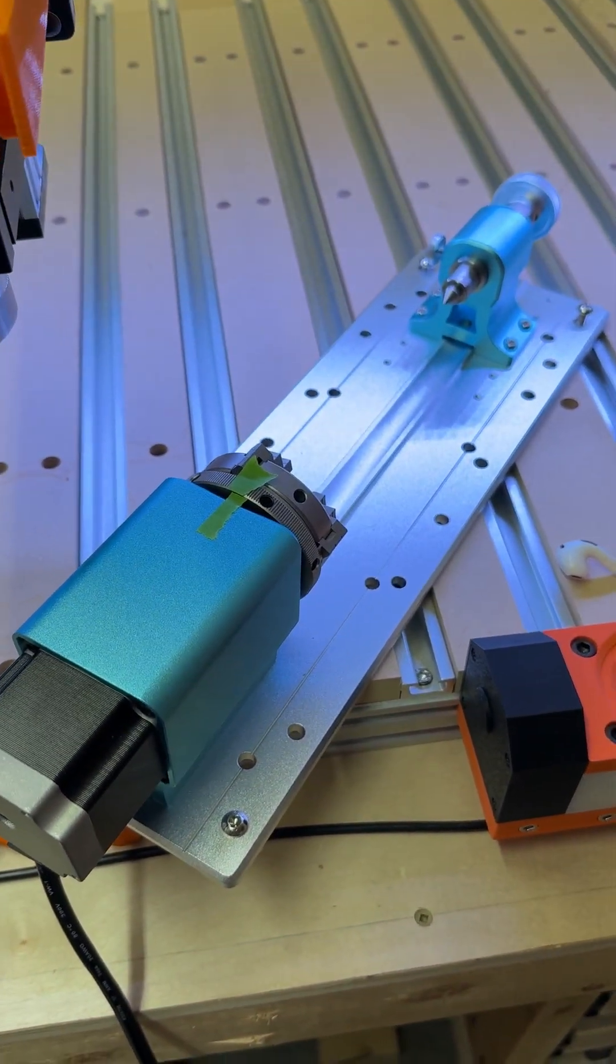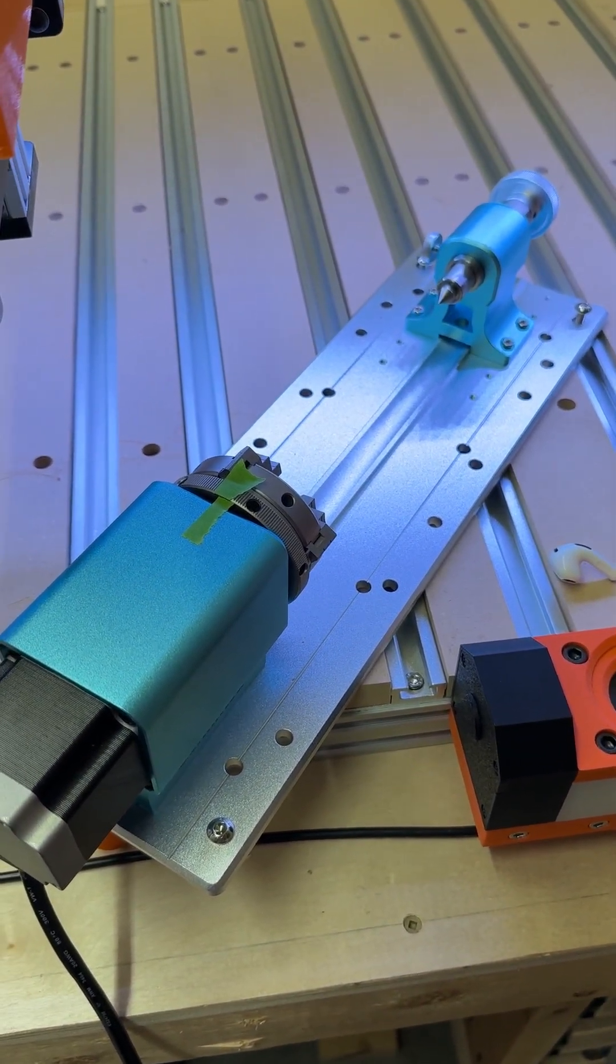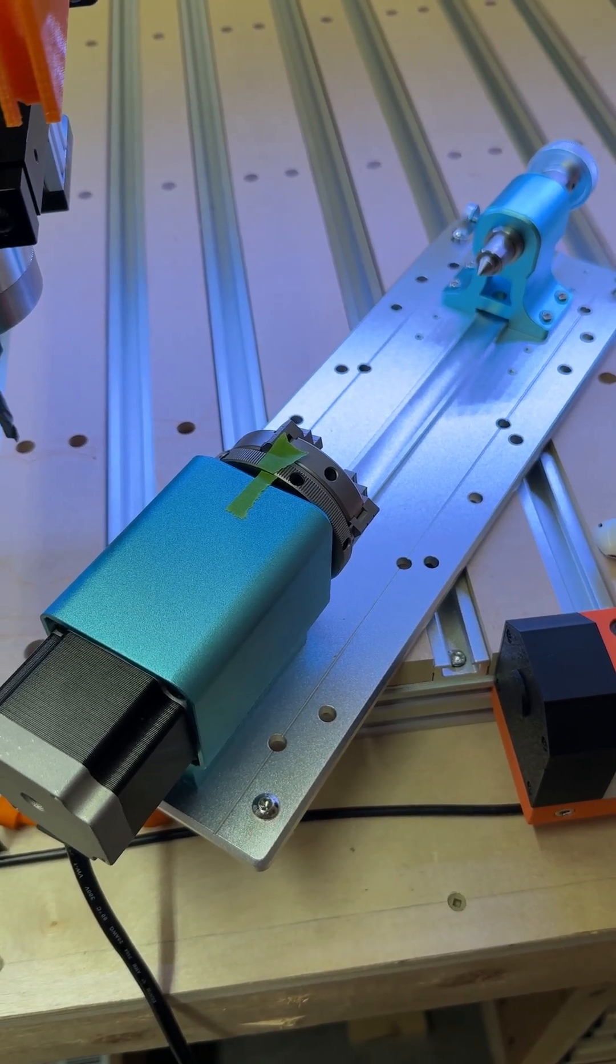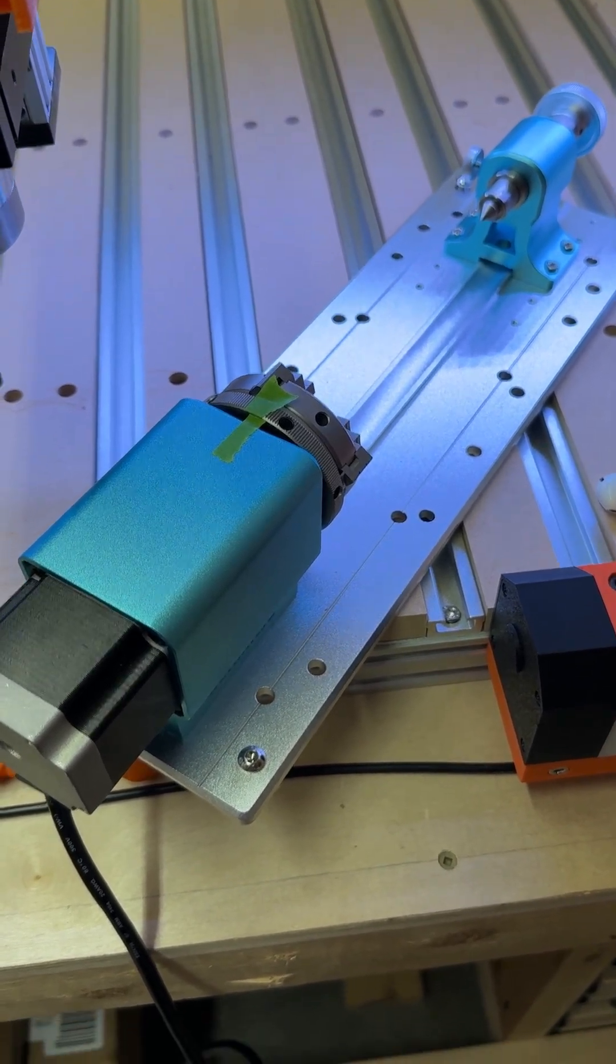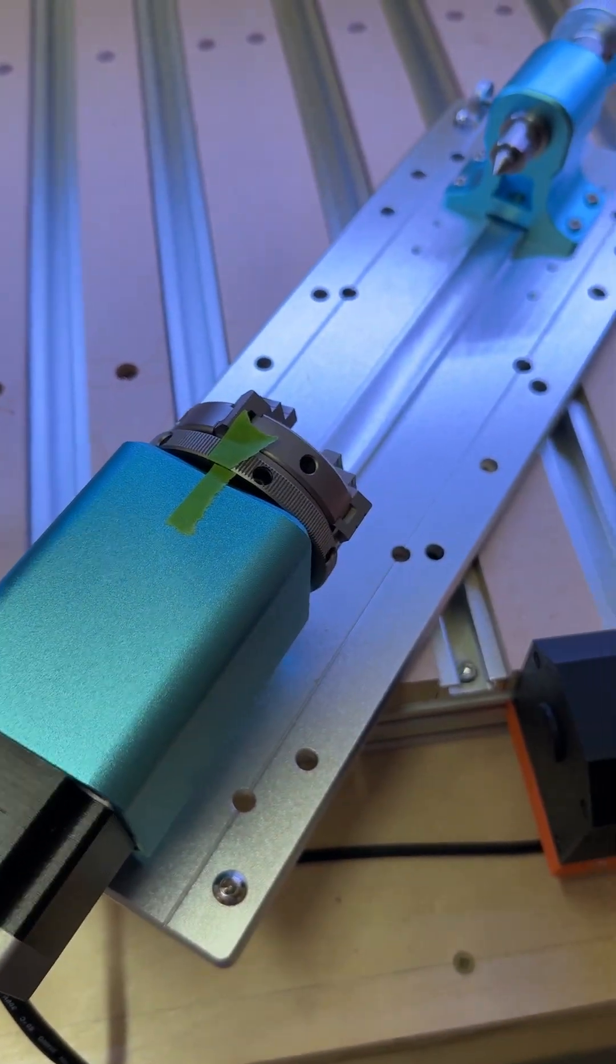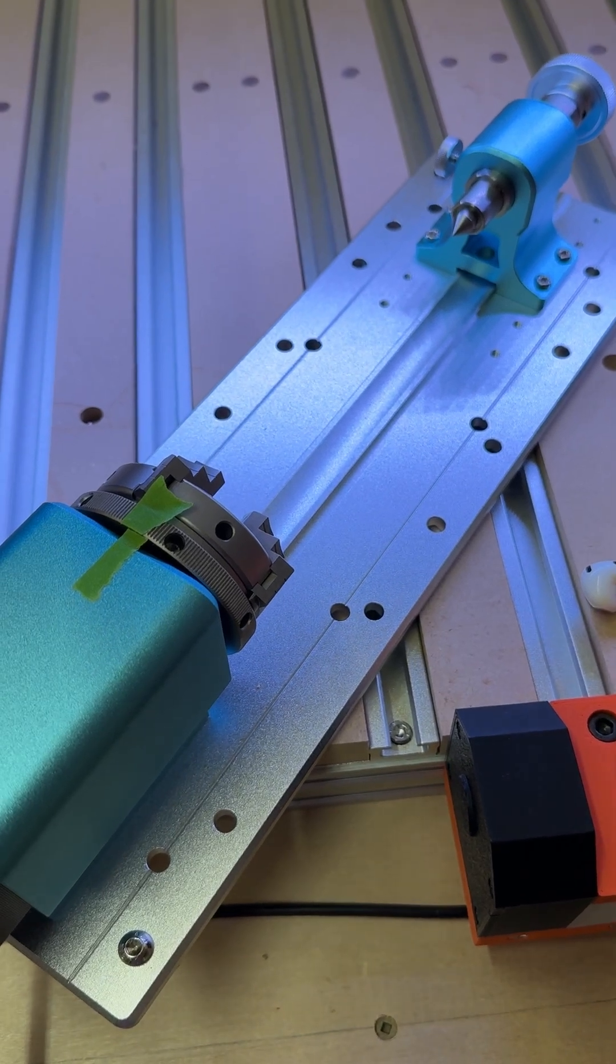Alright, so as part of my part 2 of my rotary tool video, I need to mount this thing to my spoilboard. And I realized I never actually finished my index holes, which would help greatly with aligning this to the x-axis.